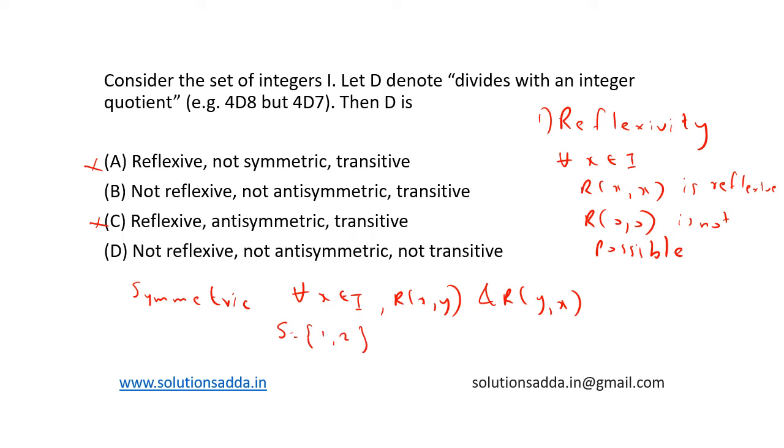So it means that (1,2) is in the relation as well as (2,1) should be in the relation. But (1,2) can be in the relation but (2,1) cannot be in the relation. So symmetric property is also not satisfied.